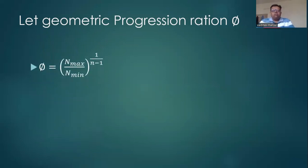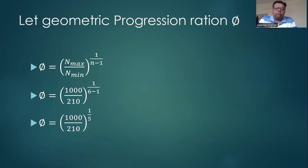φ is equal to N maximum upon N minimum raised to 1 upon n minus 1. So we are going to use N maximum as 1000 and minimum as 210, and n as 6. So we are going to use the calculator.